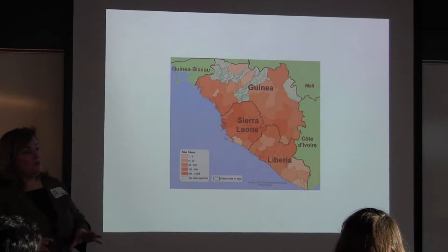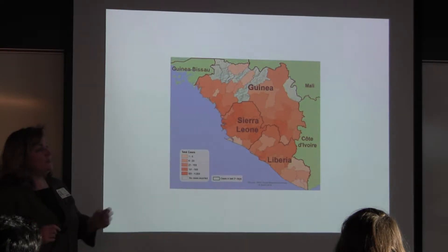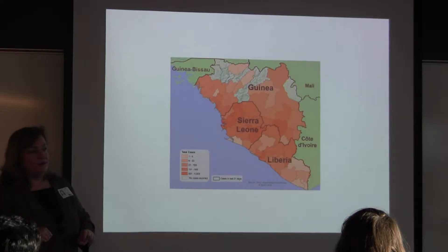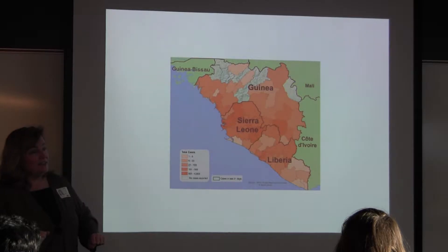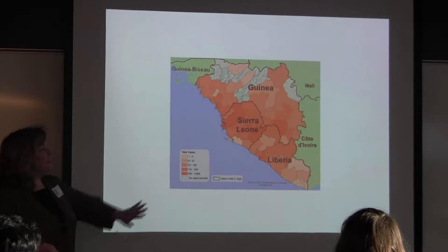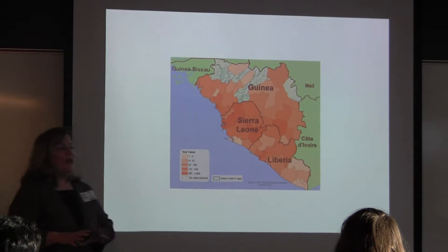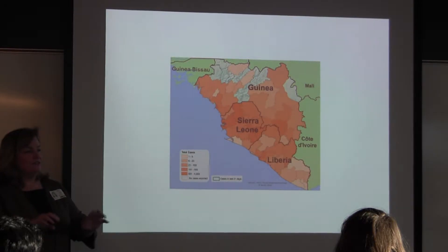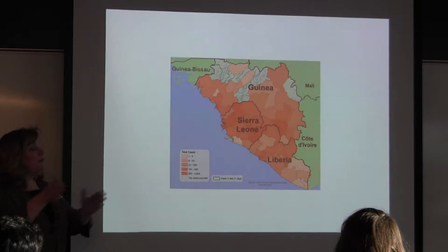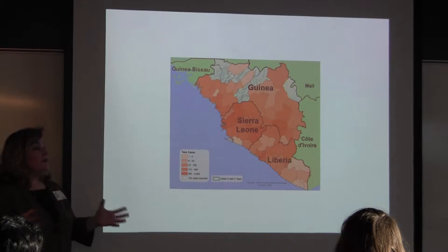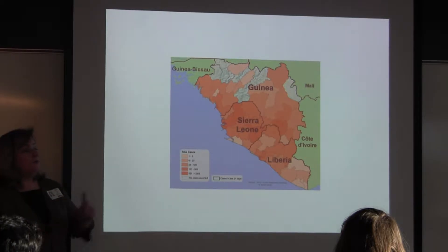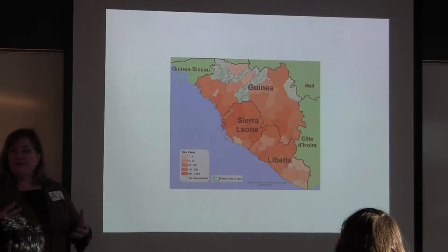We knew about hemorrhagic fever and this Ebola was no different than others in the 1960s. The difference now is they have roads connecting all these villages, and people travel to different areas and get on a plane very readily. So the issue was it could spread much easier than it could in the past.